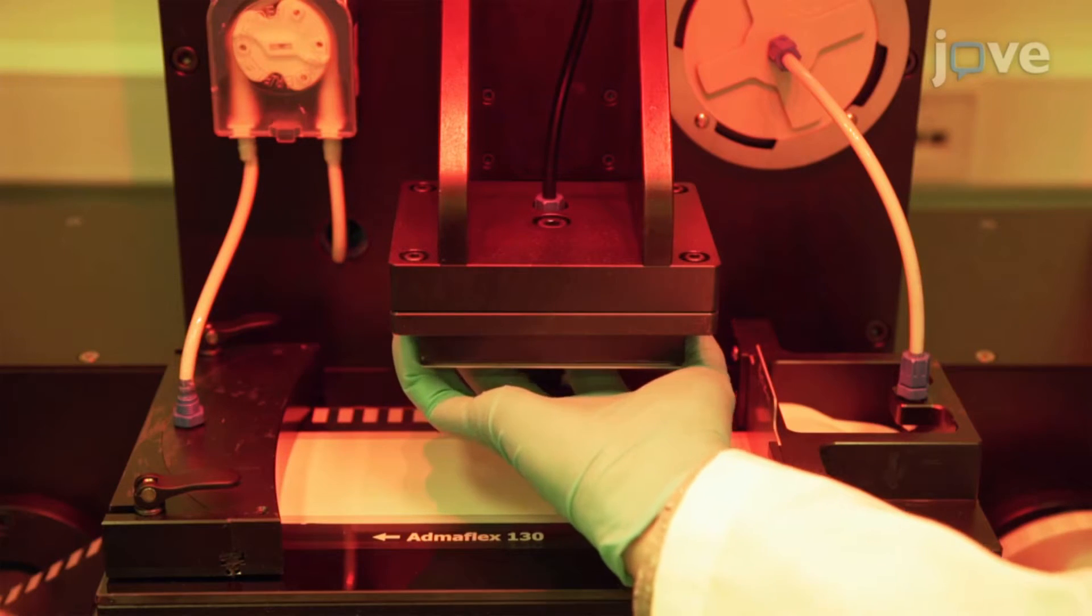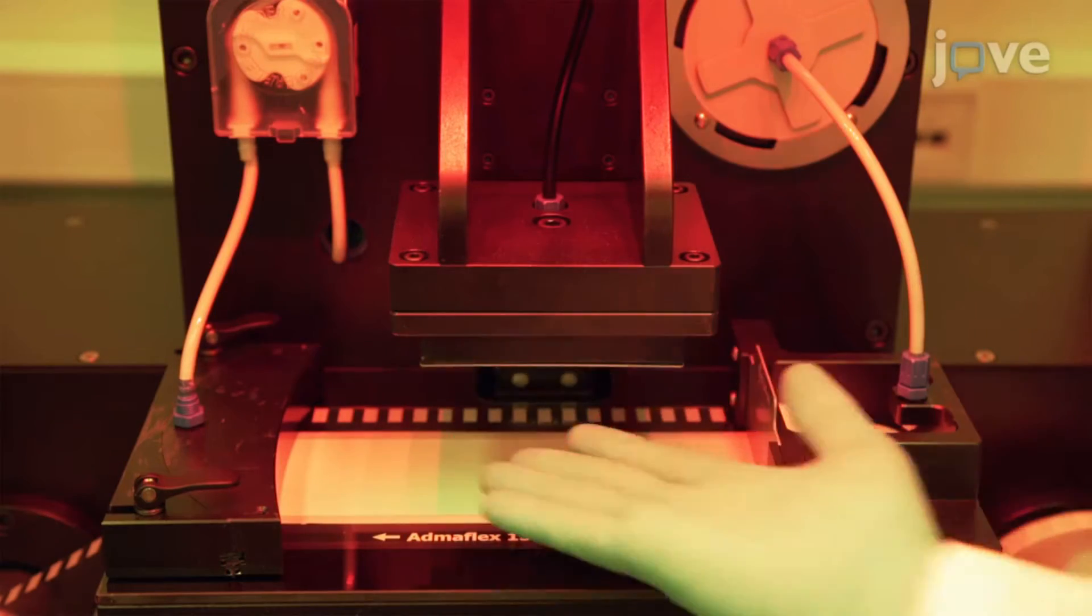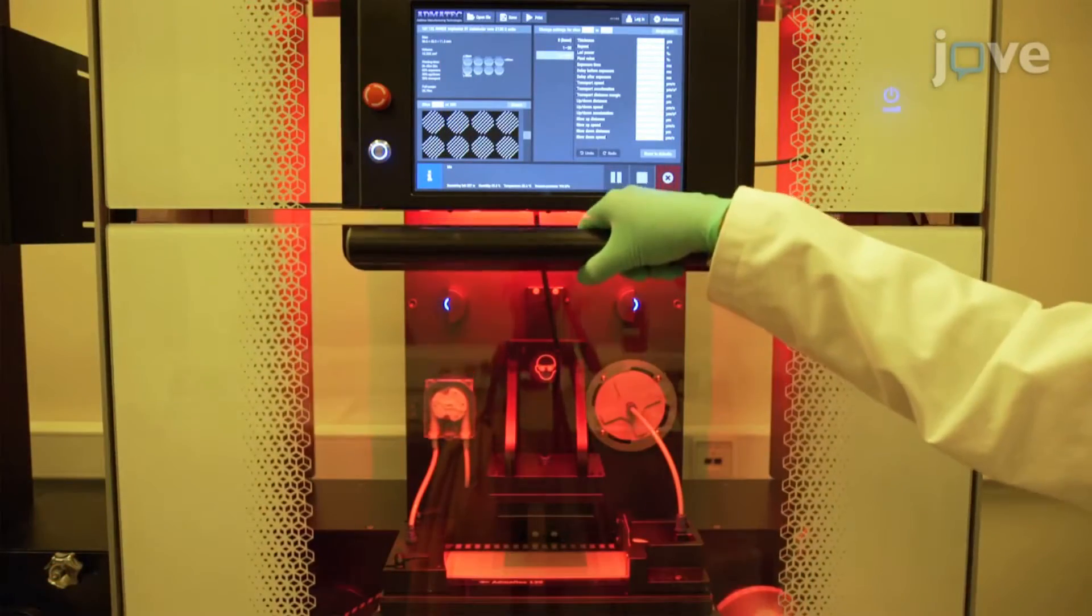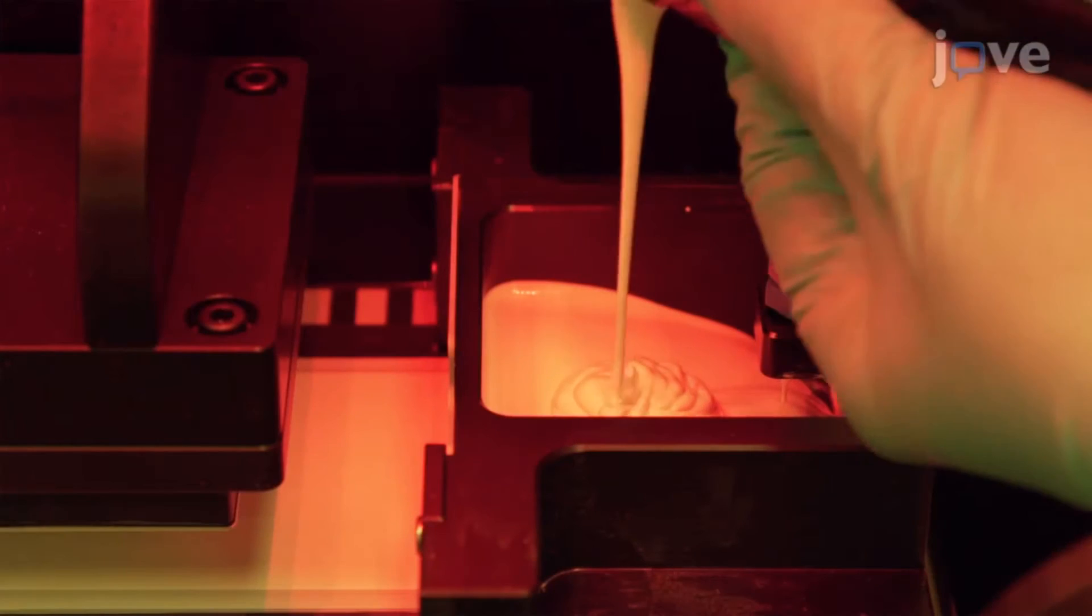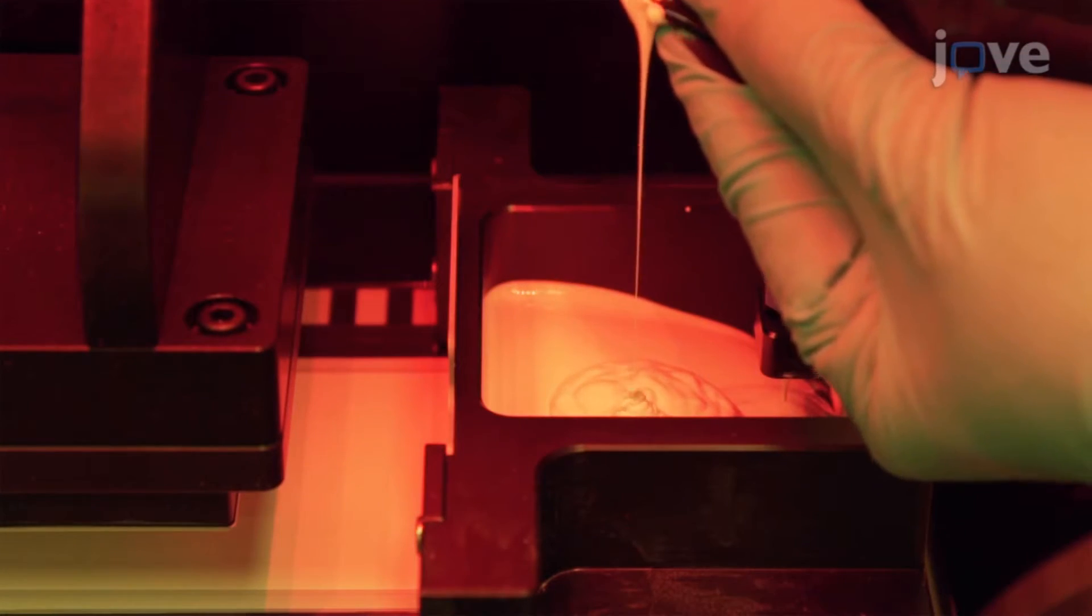Attach a metal printing plate to the building platform by vacuum suction, and start the printing program. Refill the reservoir as needed during the printing process.